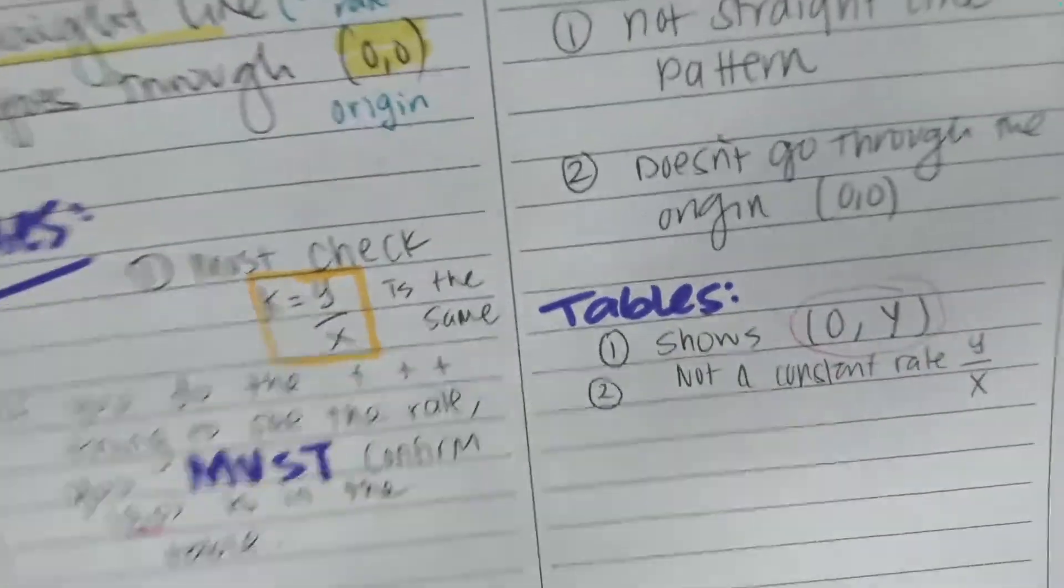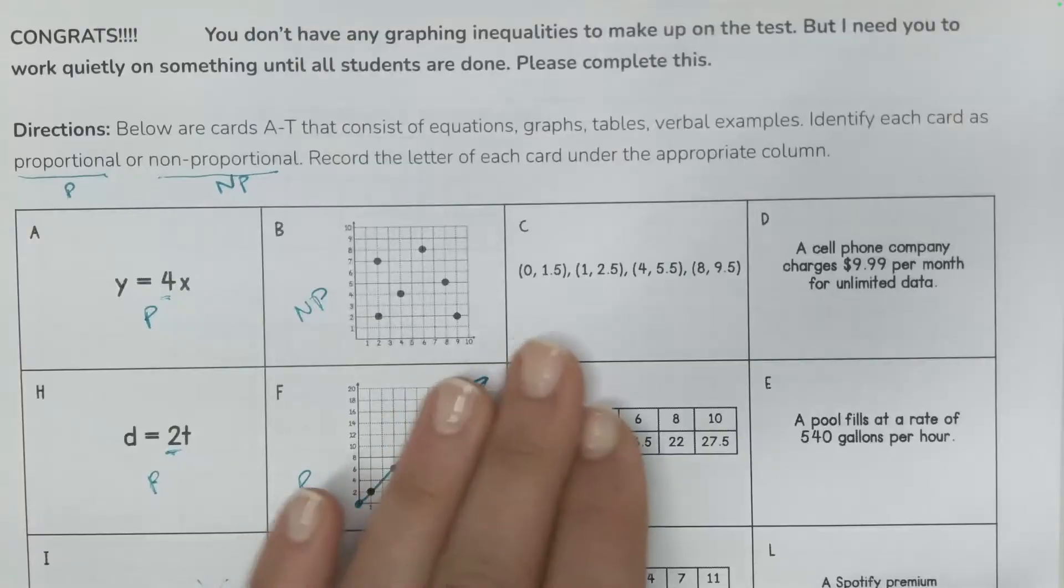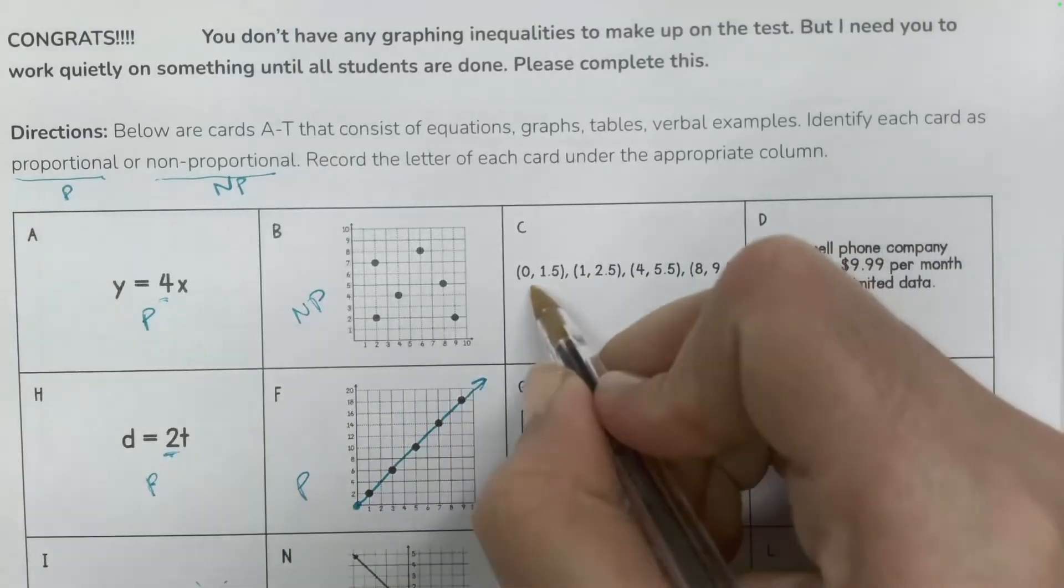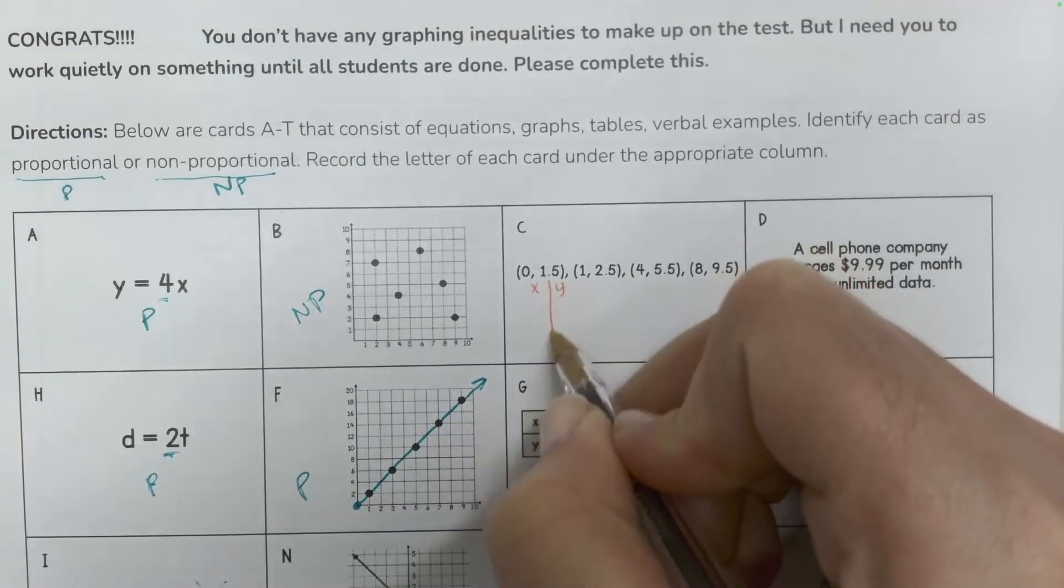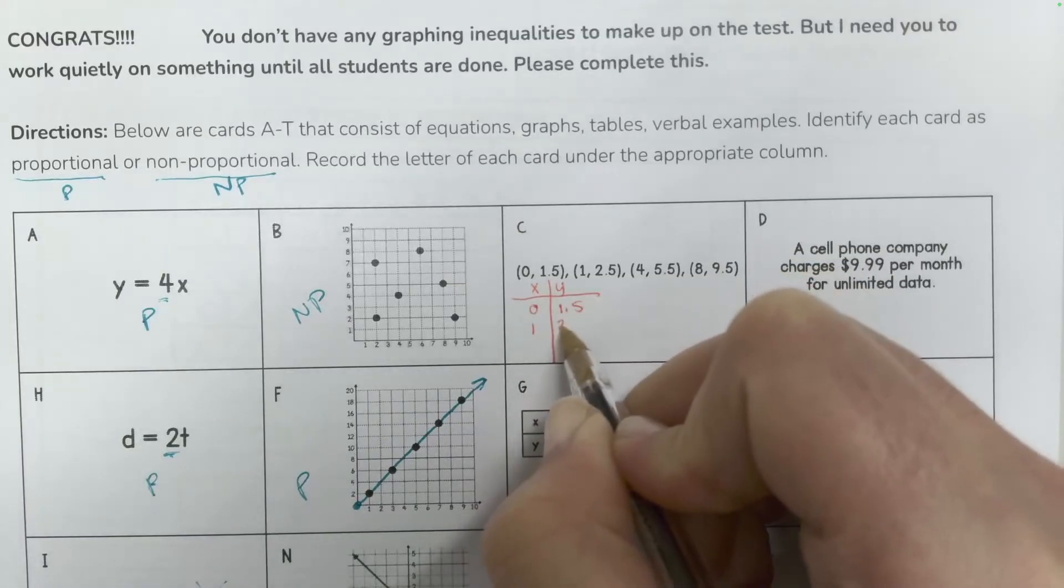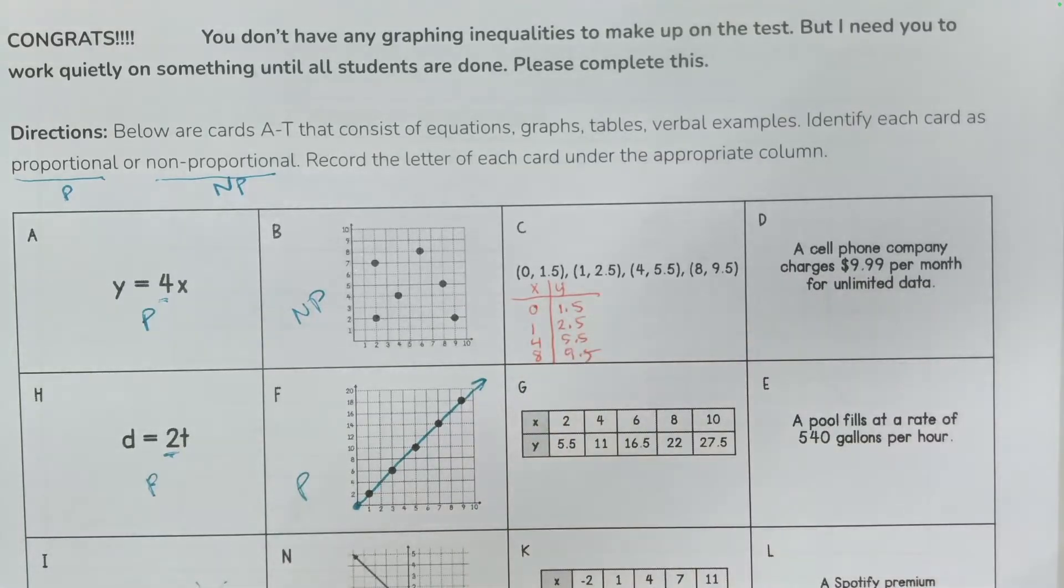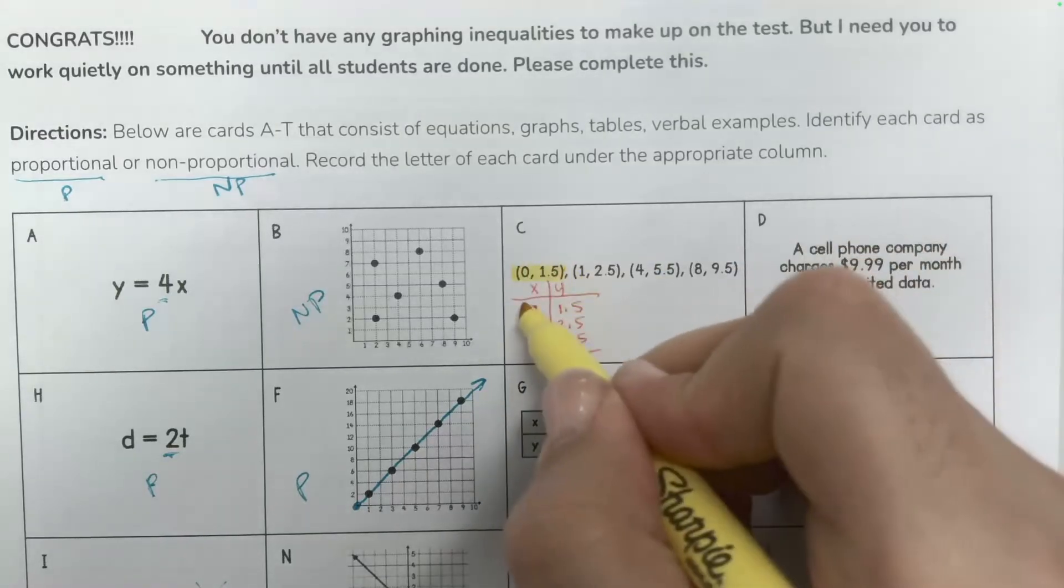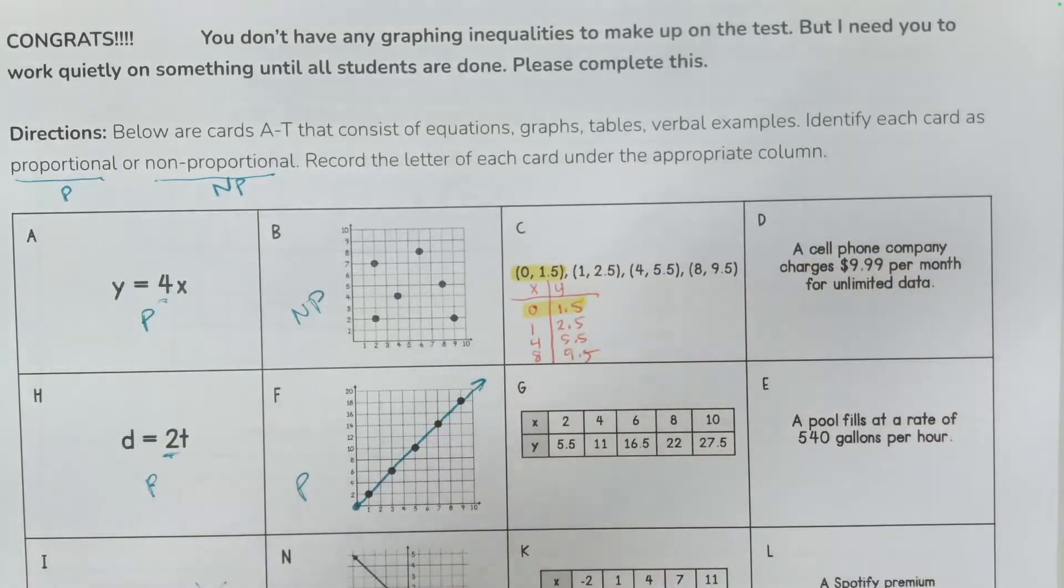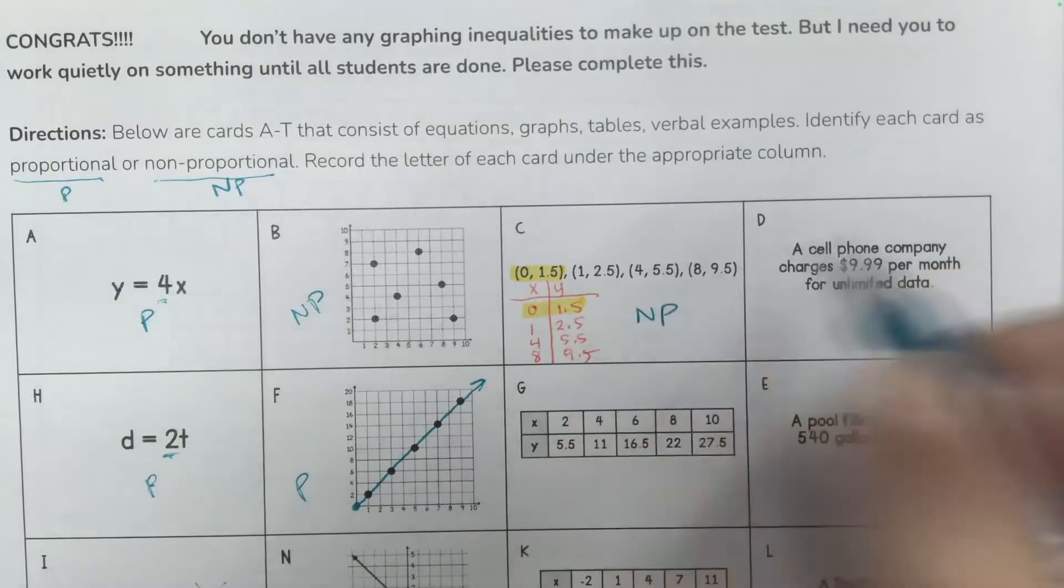So let's take a look at some values in the table. So right off the bat, and even if this was in a table, if I had this in an x, y table: 0, 1.5, 1, 2.5, 4, 5.5, 8, 9.5. If you're taking a test and you are looking at that first point, boom, it is not proportional. That is not starting at 0, 0. So definitely not proportional.